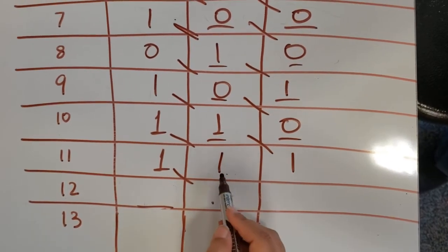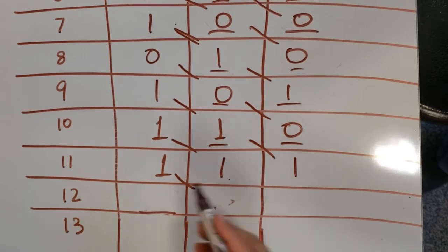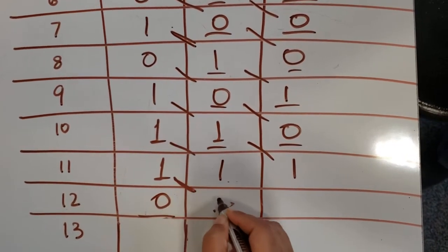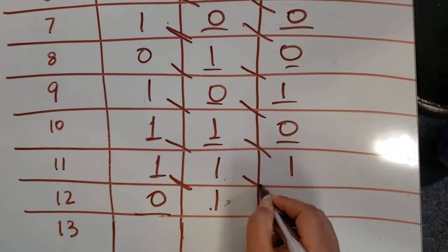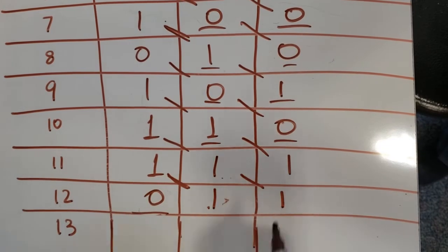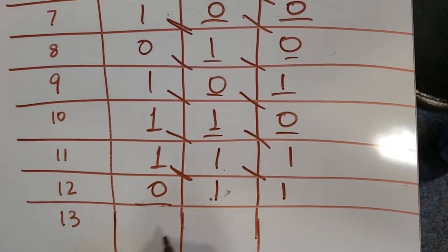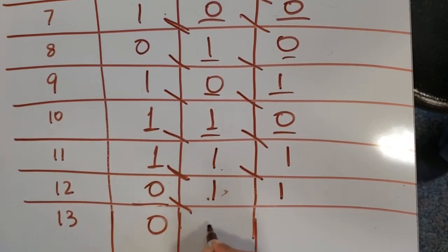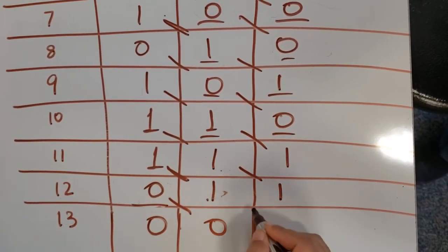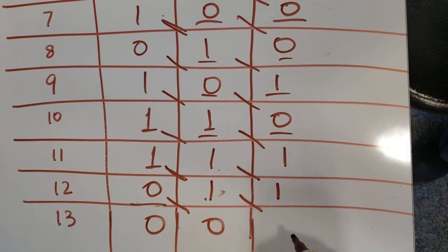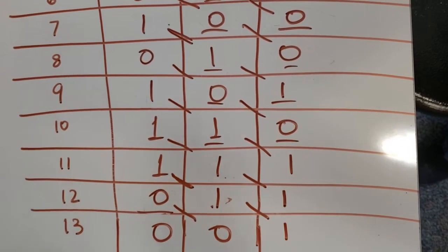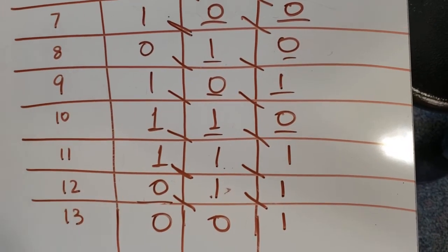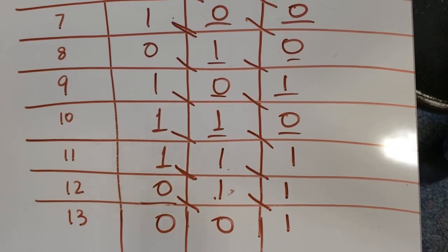XOR of 1 and 1 is 0, and 1 moves here; this 1 moves here. XOR of 1 and 1 is 0 again. Then 0 moves here and 1 moves here. We stop at clock cycle 13.